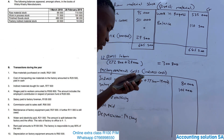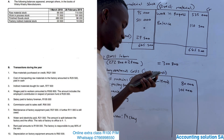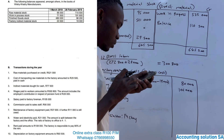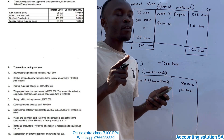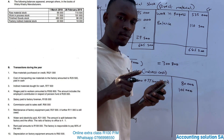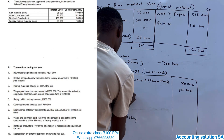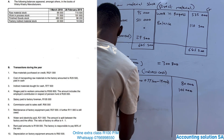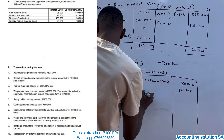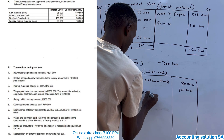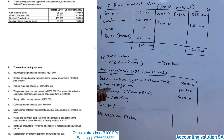Maintenance of factory equipment paid is 37,000, and a further 11,000 is still owed. If an amount is still owed — not yet recorded — we must add it, applying the same principle as the income statement. So maintenance equals 37,000 plus 11,000, giving us 48,000.